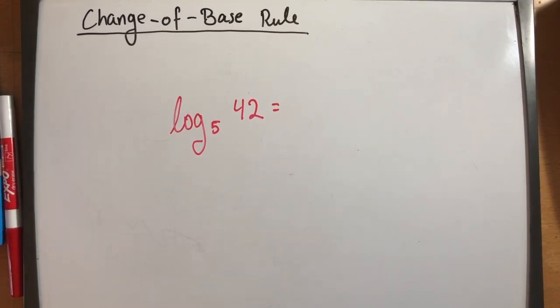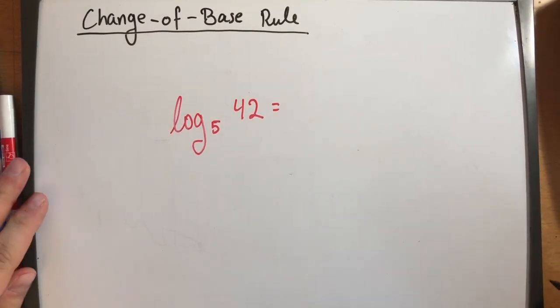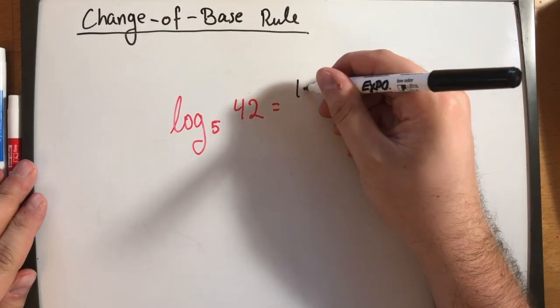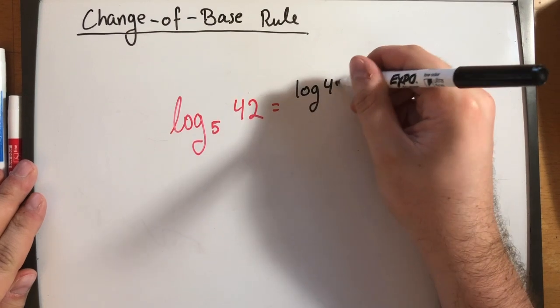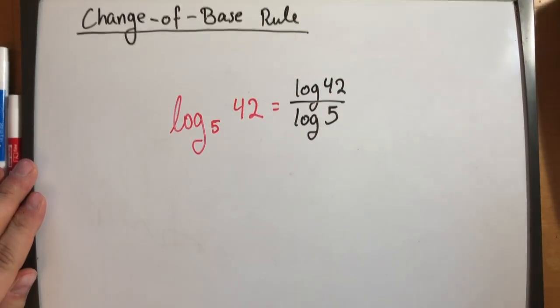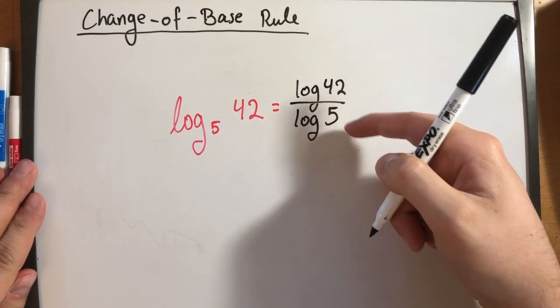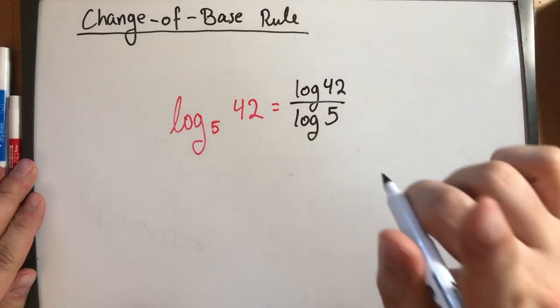So it does not matter which base you change it to. You will get the same answer regardless. So if we wanted to change this to the common log, we would do here log 42 divided by log of the old base. This value here in a calculator is going to be the solution.